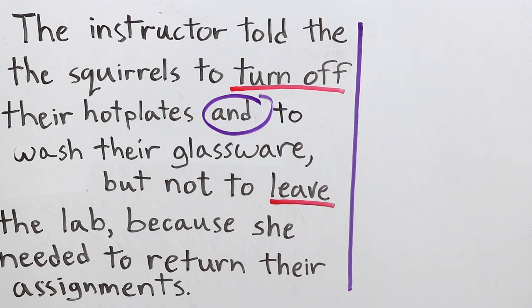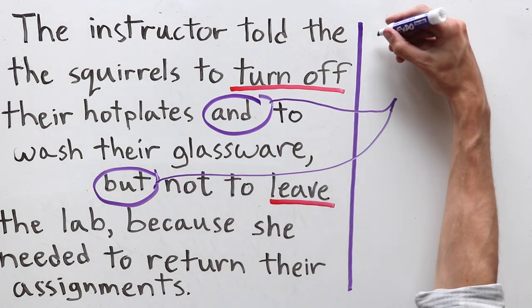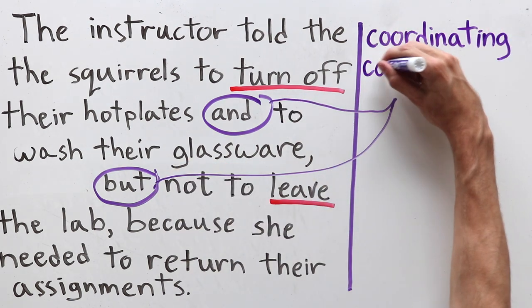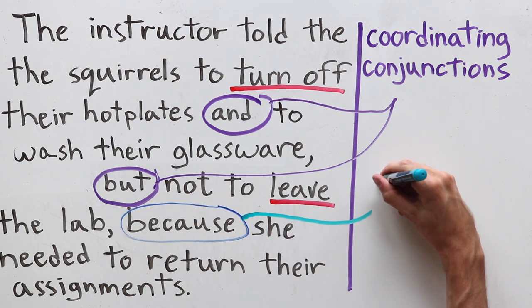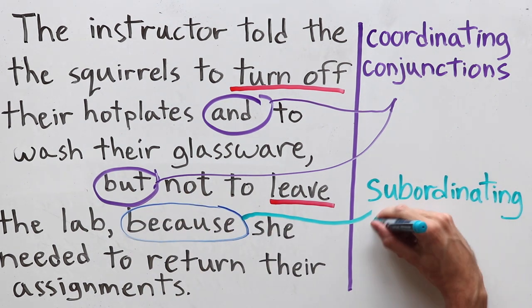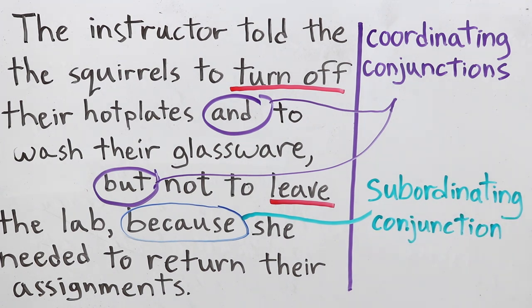Note the conjunctions AND, BUT and BECAUSE in both versions of that last example. The BUT is another coordinating conjunction. The BECAUSE, on the other hand, is a subordinating conjunction, which is used to join two independent clauses into one complex sentence. It is called subordinating because the latter part of the sentence that it joins to the former part is dependent on that first part for it to make sense.